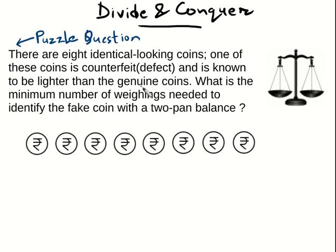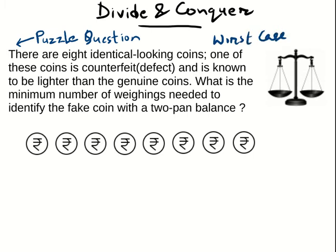Remember, it is asking for the minimum number of weighings to guarantee the solution — that means we are talking about the worst case scenario. In the best case you might get lucky on the first weighing, but here we want to guarantee the answer in the worst case. I request you to pause this video, think of a solution, and then come back.